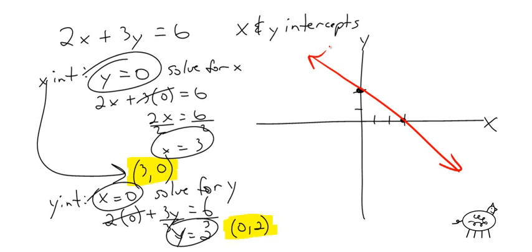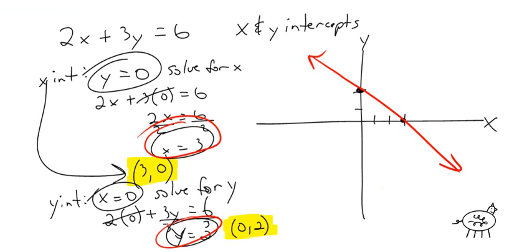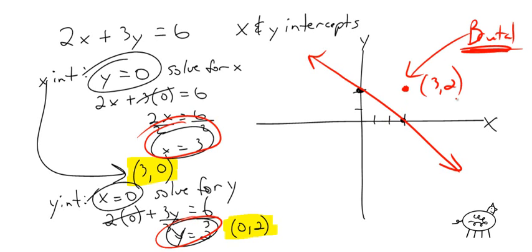Now let me tell you some common mistakes. A very common one is when people find x equals 3 and y equals 2 and then plot the single point 3, 2 — that's brutal. That's a random point in space with nothing to do with the intercepts. The intercepts are two separate points: 3, 0 and 0, 2. Another mistake is drawing random lines instead of a single straight line between the two points. Also, people just write 3 for the x-intercept and 2 for the y-intercept — that's wrong. They have to be full coordinates.